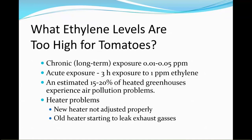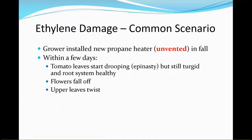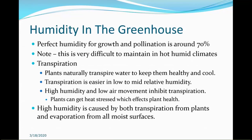A common scenario with ethylene damage: a grower installs a new propane heater, unvented, possibly because the sales rep said venting wasn't needed. Within a few days, tomato leaves start to droop — but the weird thing is they're not wilted; they're still turgid. The root system is healthy, but flowers fall off and upper leaves twist. That is a serious problem.